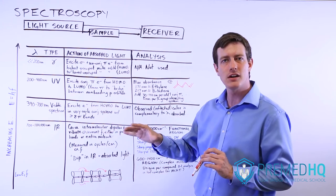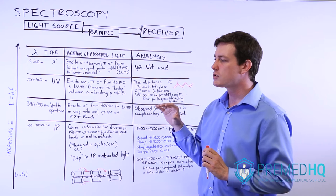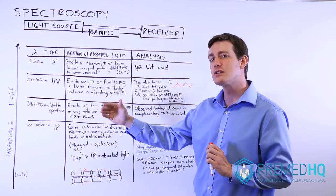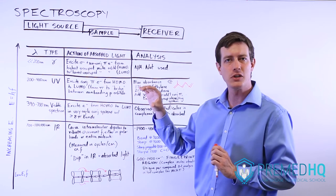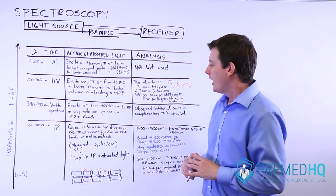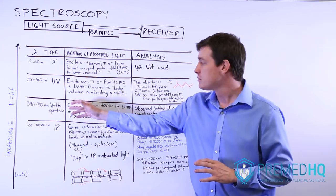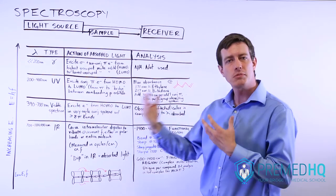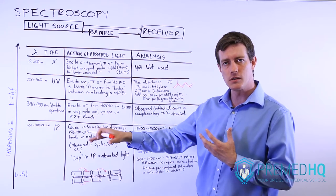Beta-carotene happens to be in a range where it absorbs blue-green light. As a result, you don't see the blue-green — you see the opposite of that, which is in the orange-red range. So be aware that the color you see with visible light spectroscopy is the complementary color to the wavelength that's actually being absorbed.